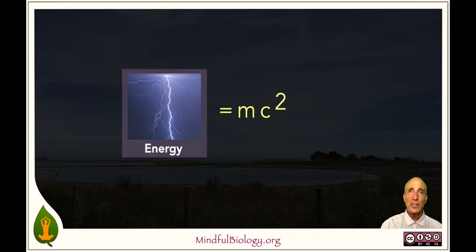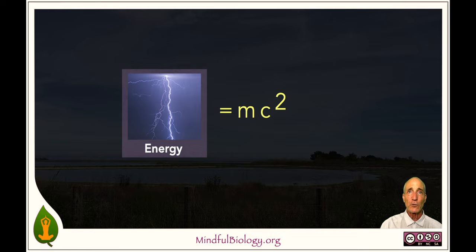We also know there is the famous formula worked out by Einstein, E equals mc squared, which tells us that energy equals the mass times the speed of light squared of an object. Another way of saying this is that matter is concentrated — very concentrated — energy.